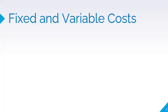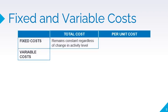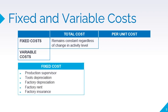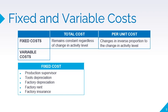Costs can also be classified as fixed or variable. Fixed costs are those costs that remain constant in total regardless of the activity level. The salary of the production supervisor, tools depreciation, factory depreciation, factory rent, and factory insurance are considered fixed costs — they remain constant regardless of how many tables, chairs, or cabinets are produced. On a per-unit basis, fixed costs vary in proportion to the activity level. When more furniture are produced, the total fixed costs are allocated to more units, so each unit receives a smaller share. When less furniture are produced, each unit receives a bigger share of the fixed costs.